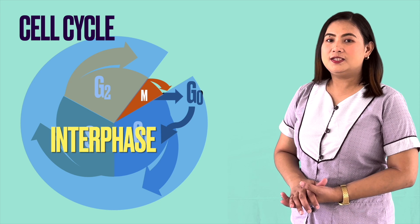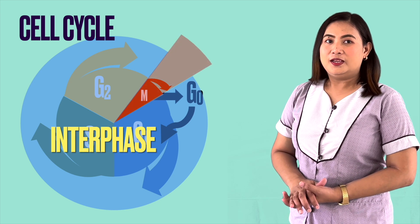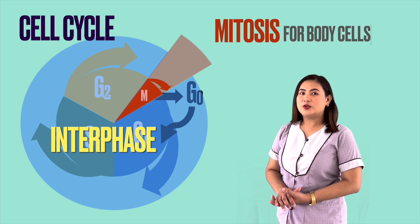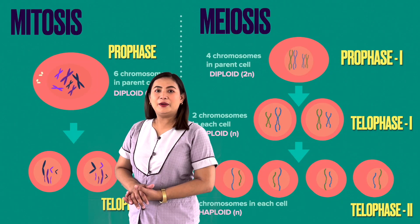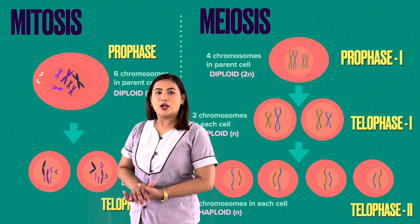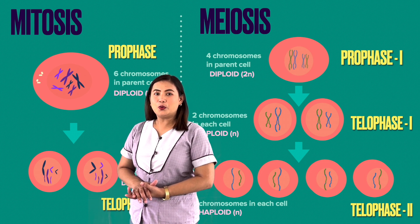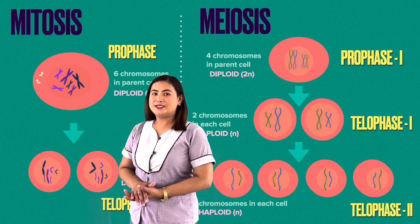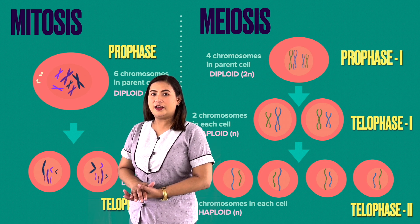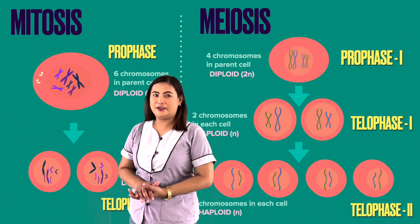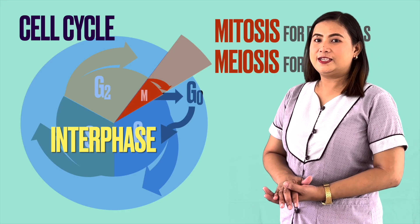Alternating with interphase is the cell division phase, or the M phase. In eukaryotic cells, there are two types of cell division. In mitosis, this type of cell division produces two identical cells with the same number of chromosomes. Meiosis is a special type of cell division where the cell undergoes two rounds of cell division to produce four daughter cells, each with half the chromosome number as the original parent cell, and with a unique set of genetic material as a result of crossing over.